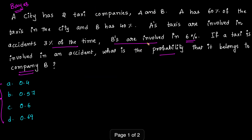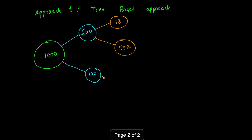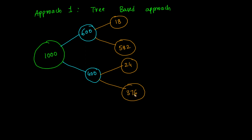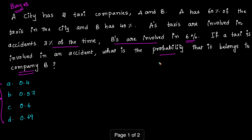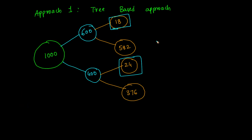Similarly for company B, 6% of the taxis are involved in an accident. That means 6% of 400 is 24 cars involved in an accident, and the remaining 376 cars are not. Looking at the overall tree diagram, 18 cars from company A and 24 cars from company B have been involved in an accident, giving 42 total. We need to find how many of those 42 cars belong to company B — that is 24.